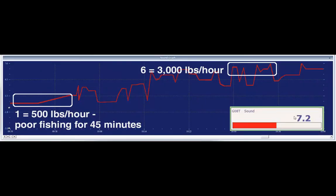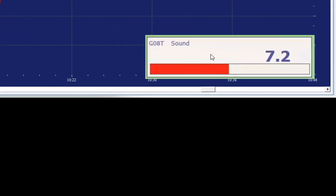Now let's look at what the data actually looks like and what that data means. Data is displayed in a numeric format and as a graph over time. For example, on this log, the sound is currently 7.2.